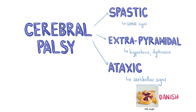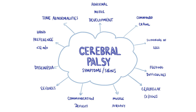There are three types of CP. Spastic cerebral palsy is where there's injury to the upper motor neurons resulting in upper motor neuron signs affecting a region of the body depending on the location of the insult. Extrapyramidal cerebral palsy is when there's damage to extrapyramidal tracts in the brain resulting in hypertonia and dyskinetic movements like chorea and dystonia. Ataxic cerebral palsy is where there's damage in the cerebellum causing cerebellar signs. Patients with CP may present with tone abnormalities, abnormal motor development including late head control, rolling, crawling and walking, and hand preference before 12 months, commando crawl and scissoring of the lower legs.